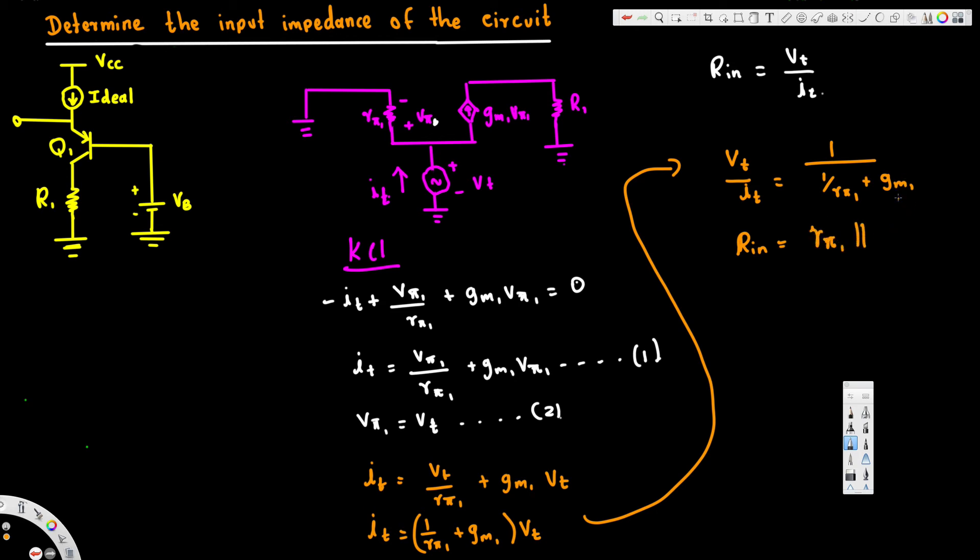Since gm1 is in the numerator, we have to think it like 1 over (1 over gm1). So this is going to be 1 over gm1 parallel. And we know that vt over it is Rin, and that is r51 parallel to 1 over gm1. That's all we had to show. That's the final solution.